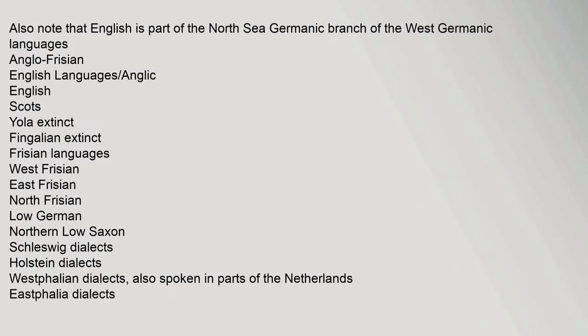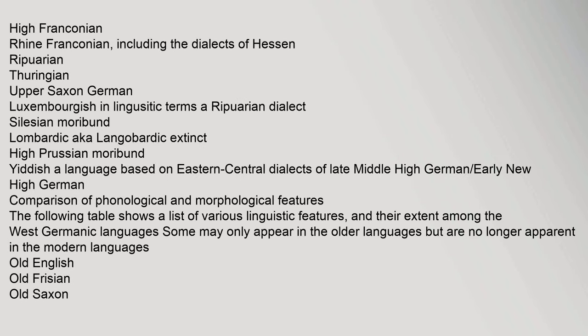English is part of the North Sea Germanic branch of the West Germanic languages. The Anglo-Frisian English languages include English, Scots, Jola (extinct), and Fingalian (extinct), as well as the Frisian languages — West Frisian, East Frisian, and North Frisian. Low German includes Northern Low Saxon, Schleswig dialects, Holstein dialects, Westphalian dialects, Eastphalian dialects, Brandenburg dialects, Pomeranian, and Low Prussian. Low Franconian includes Dutch, West Flemish, East Flemish, Zeelandic, Brabantian, East Dutch, Limburgian, and Afrikaans. High German includes Standard German, Alemannic (including Swiss German and Alsatian), Swabian, Austro-Bavarian, Rhine Franconian, Ripuarian, Luxembourgish, Yiddish, and the extinct Langobardic.